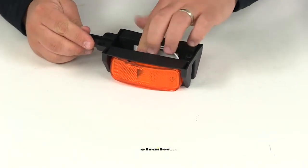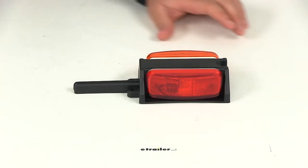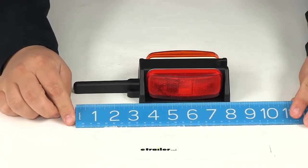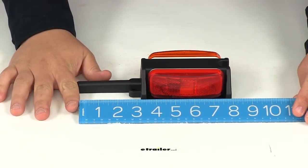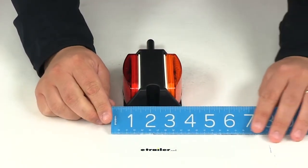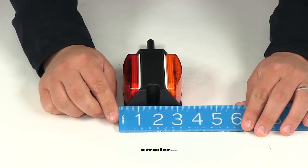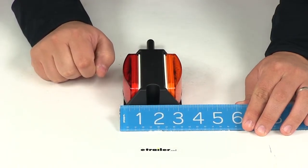We're going to take a look at the overall dimensions of the light, starting with the overall length, measuring from edge to edge. That gives us a measurement of about eight inches long. And then the overall width, measuring from edge to edge, gives us a measurement of about three and one quarter of an inch.